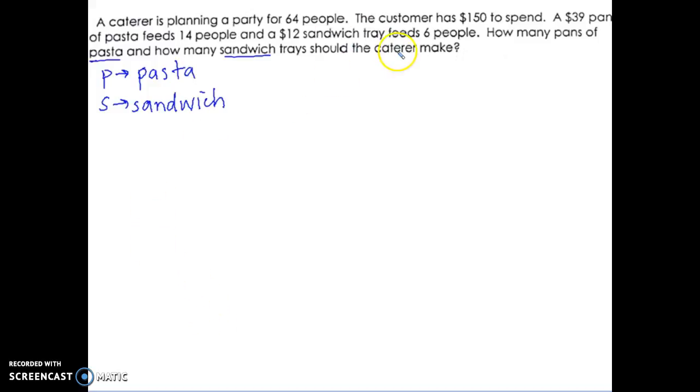So then the equations - the information that I have, again I have money: $150, $39, and $12. So I could say that 39P plus 12S equals 150. And then it says there are 64 people. 14 people eat a pan of pasta and 6 people get a tray of sandwiches, so I could say 14P plus 6S equals 64 total people.